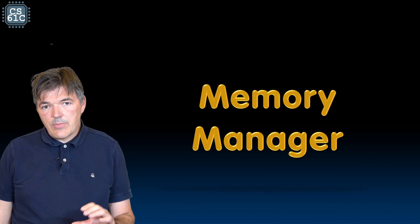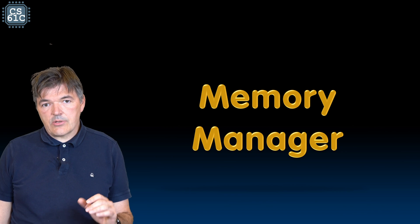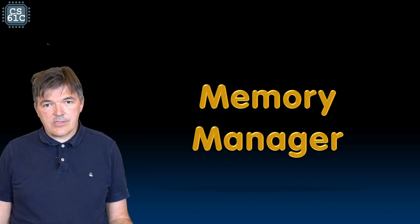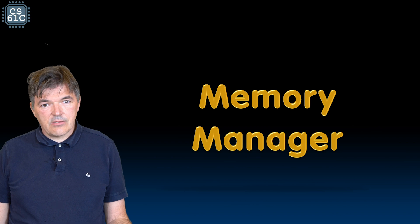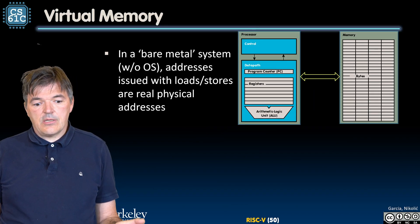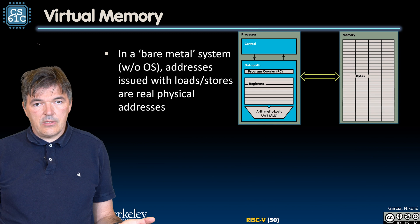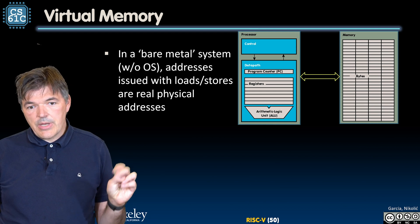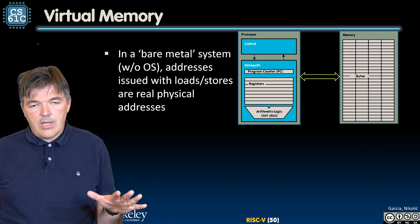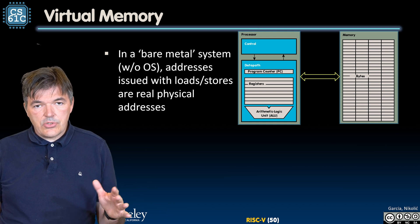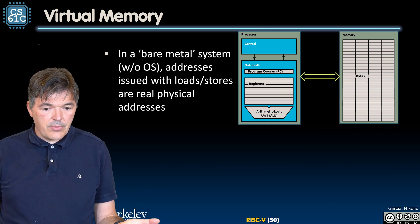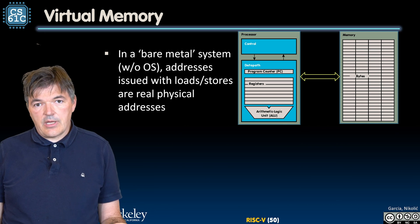Let's see how memory and addressing work when there are multiple processes trying to use it. In the simplest case, when running a bare metal system with no OS support, addresses issued by loads and stores in the program are real physical addresses.